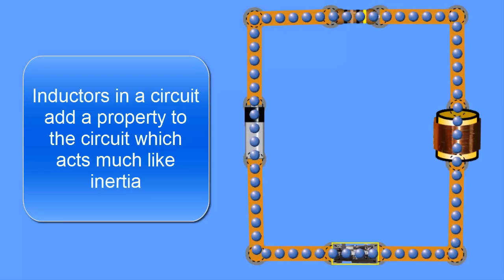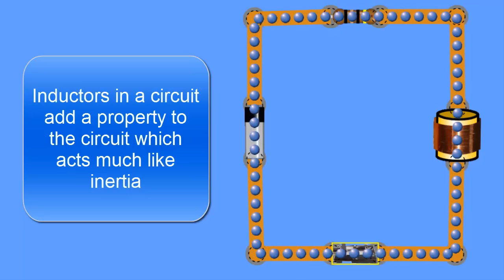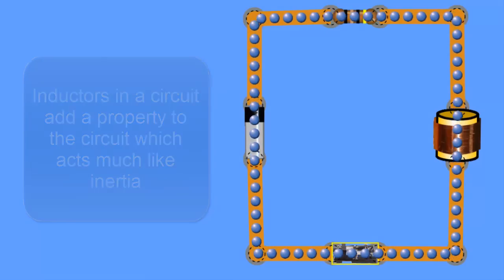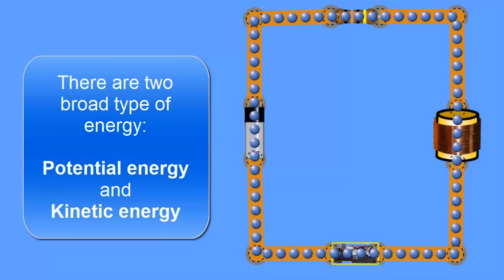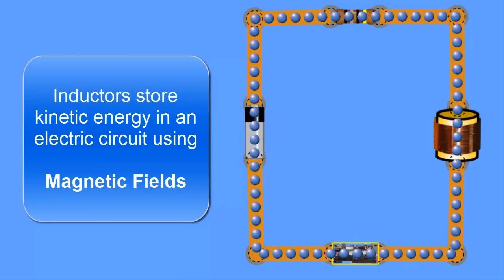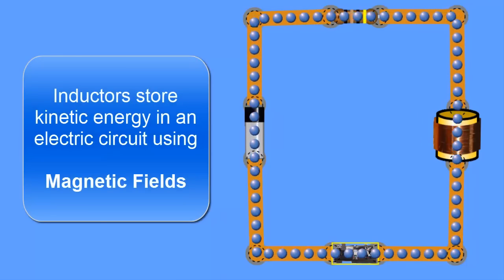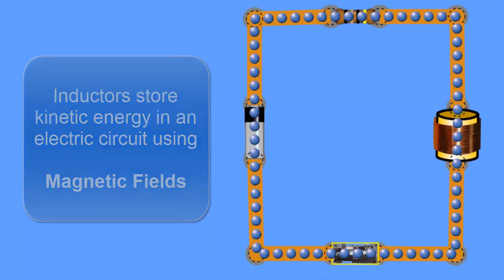And so when a train starts out it has to push very hard. So from physics you should know that there are two types of energy: potential energy and kinetic energy. Inductors store kinetic energy, or we can look at them as storing kinetic energy. They're storing energy due to motion. In this case motion of electrons.